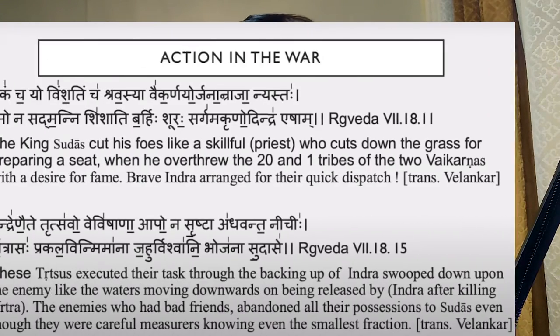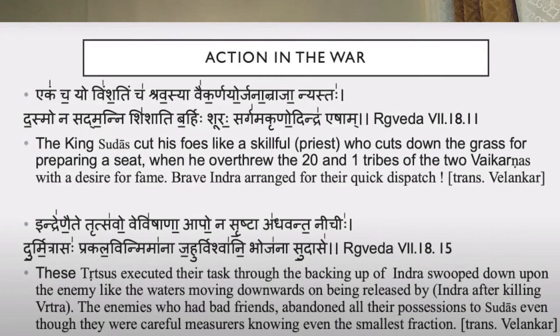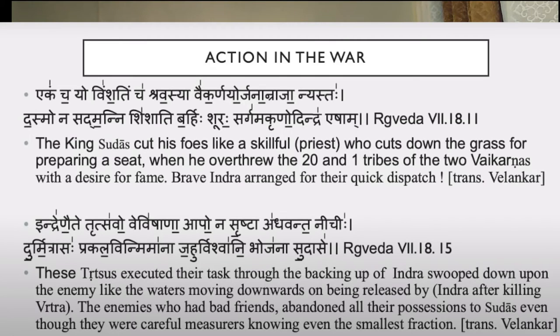This war had several key battles, but the final one at the river Ravi was decisive. According to the Rig Veda, the ten kings attempted to construct a dam to divert the waters of the river Ravi, but their plan failed. Most of their troops drowned. The Purus lost their king, and the Bharatas captured all the kingdoms, settling in Kurukshetra. Later, the Purus and Bharatas merged to form the Kuru dynasty — the dynasty of the Kurus and Pandavas.